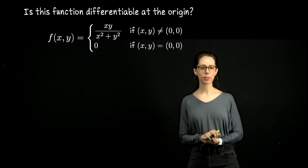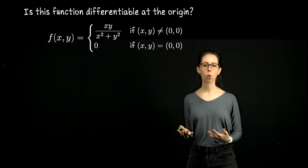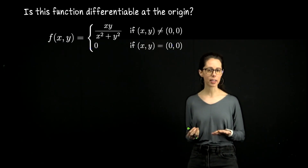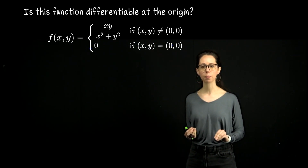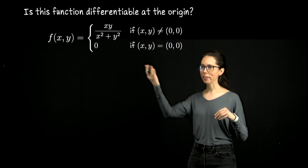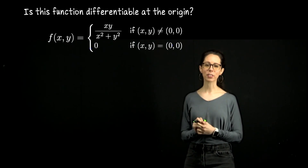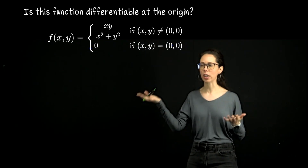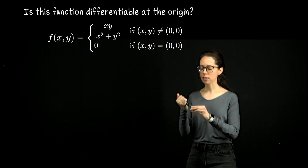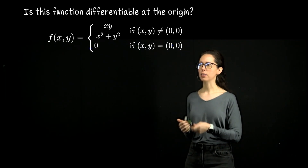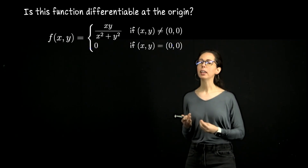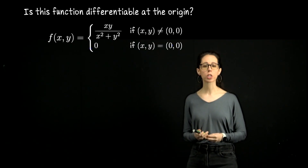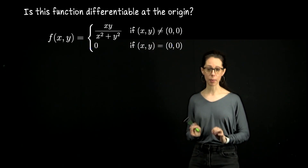If you want to take partial derivatives to form the coordinates of your Jacobian matrix, your function should be consistently defined in an open neighborhood around the point in question. That's not the case here because our function is defined differently at the origin. As soon as you step away from the origin, the function changes. So to get information about the partial derivatives at the origin, you must use the limit definition.